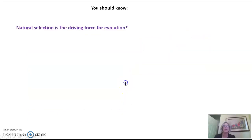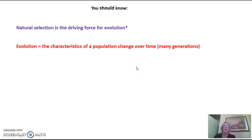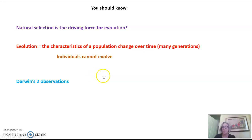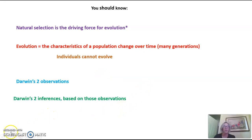So what should you know from this video? You should know that natural selection is the driving force for evolution. You should know that evolution is defined as the characteristics of a population changing over time — many generations. You should know that individuals cannot evolve; only populations can evolve. And you should know Darwin's two observations and his two inferences based on those observations. That's all for tonight.